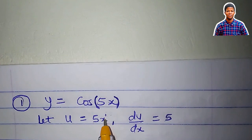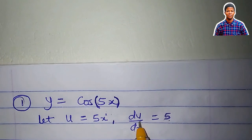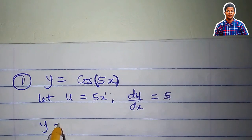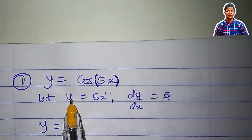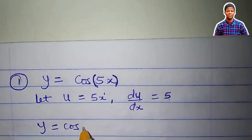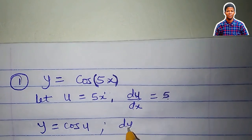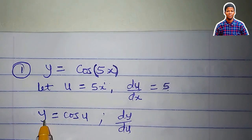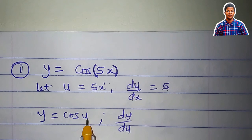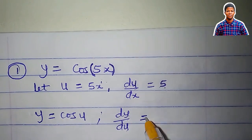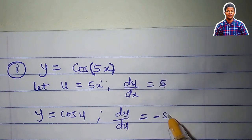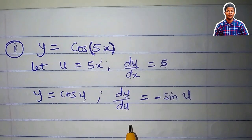1 minus 1 is 0, and x to the power of 0 is 1, so du/dx is 5. Having done this, I can now write y = cos(u), because we said let u be equal to 5x. I will differentiate y with respect to u. Remember from the previous video: the derivative of cos(x) is minus sin(x), so the derivative of cos(u) is minus sin(u).